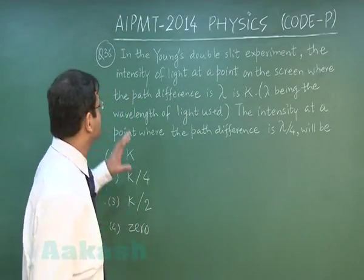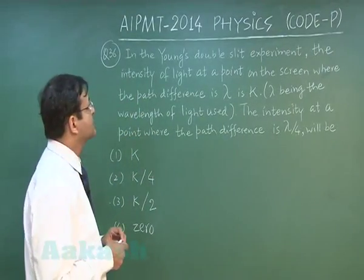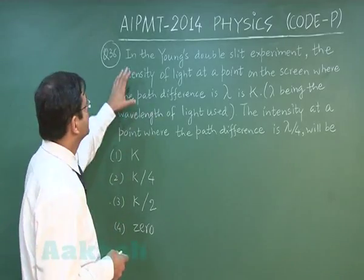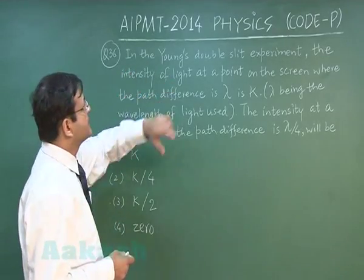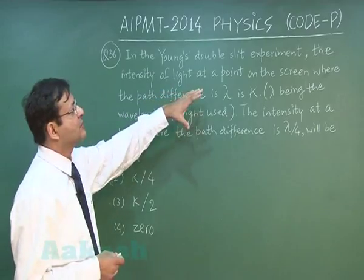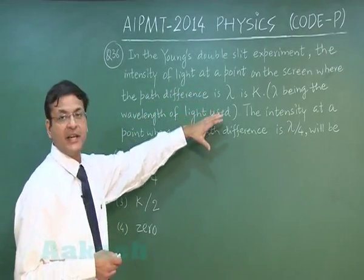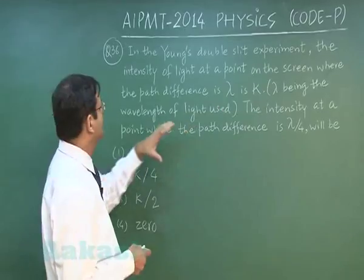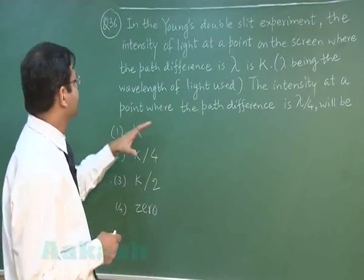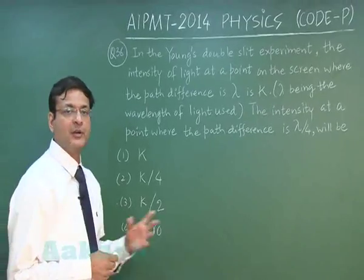In question 36, which is based on Young's double slit experiment, in the double slit experiment the intensity of light at a point on the screen where the path difference is lambda is k, where lambda is the wavelength of light used. The intensity at the point where the path difference is lambda by 4 is to be found.